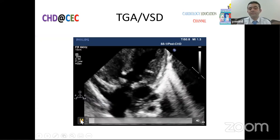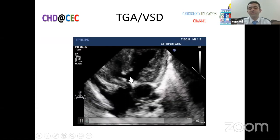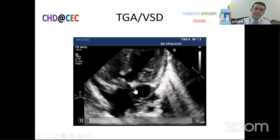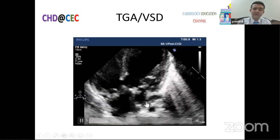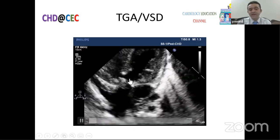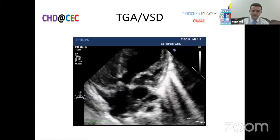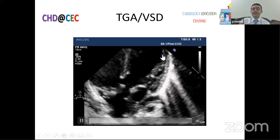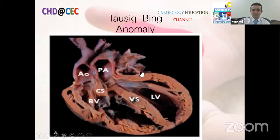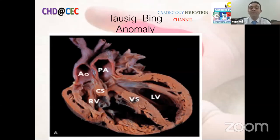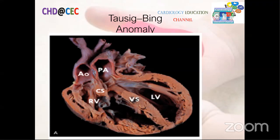In another echo case: an apical five-chamber view clearly shows the pulmonary artery with its branching pattern arising posteriorly — confirming the diagnosis. An unrestrictive VSD is also identified, with the left ventricle maintaining adequate size and function, making this a favorable case for arterial switch.